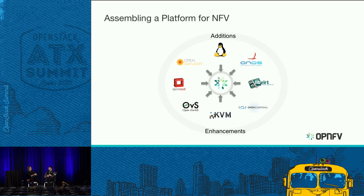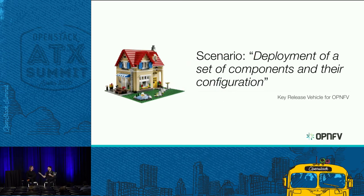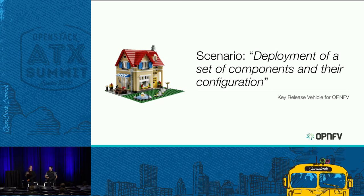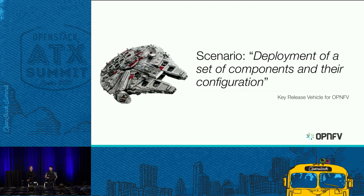That put us in a bit of a twist — we didn't really know how to plan this. We set off trying to prove we can run our platform, not just one platform but any flavor of it on any hardware. We didn't have a process, so it led us to defining a new terminology: we call this assembly a 'scenario,' which is a deployment of a set of components and their configuration. It's like Lego blocks — OpenStack is a Lego block, there are blocks for SDN controllers, for virtual forwarders. You can piece it together to build a house or a Millennium Falcon — it's up to how you assemble the blocks.